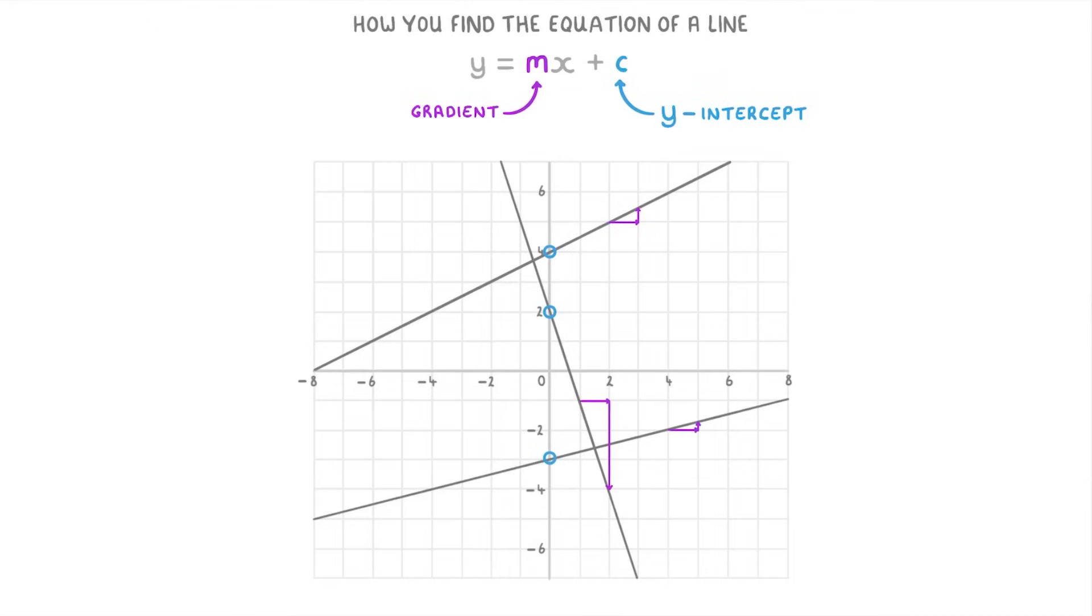So all you need to do is find the gradient and the y-intercept of a line and plug those values into the equation. To see how this works, let's start with this question where we need to find the equation of the line on this graph.